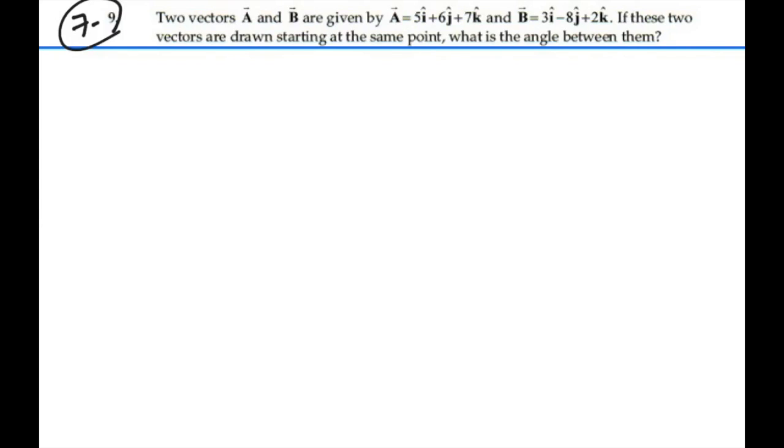But we can find the angle if we use our two definitions of the dot product. One definition was that A dotted with B is equal to the magnitude of A times the magnitude of B times the cosine of the angle between them.